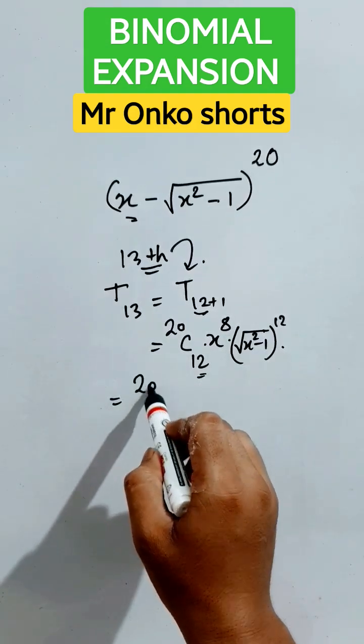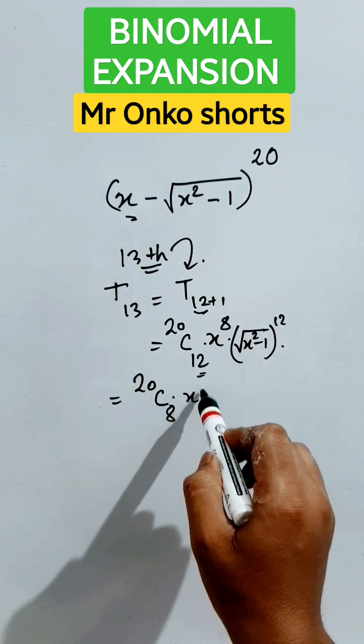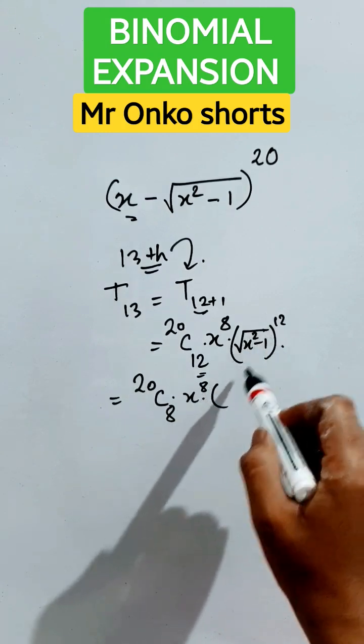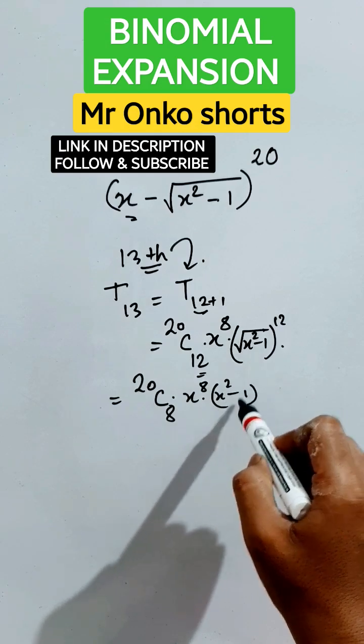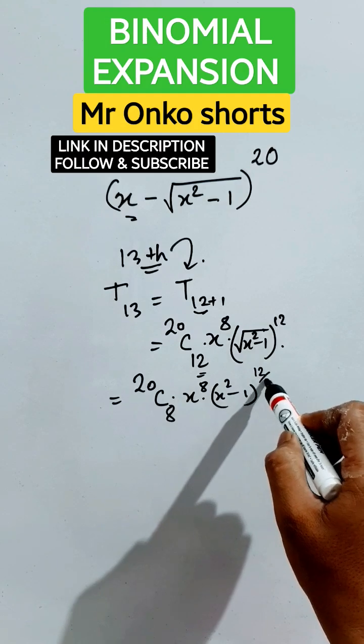Term will be 20C12, it means 20C8, into x to the power 8, into (x² - 1), the power is half here. It is taking the place of square. That is the 13th term.